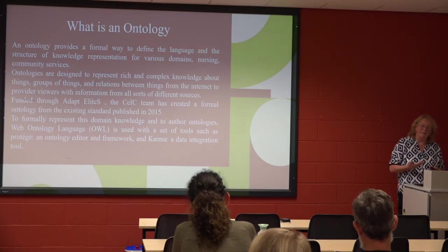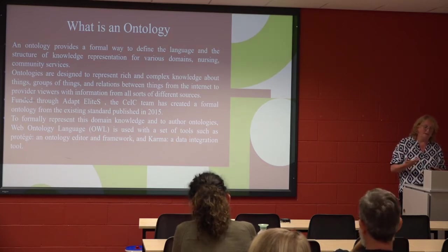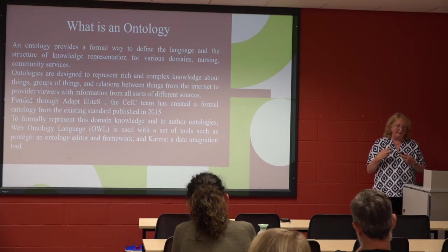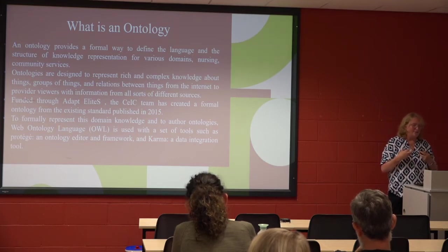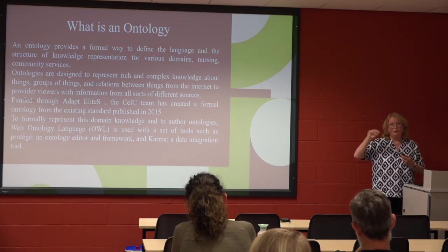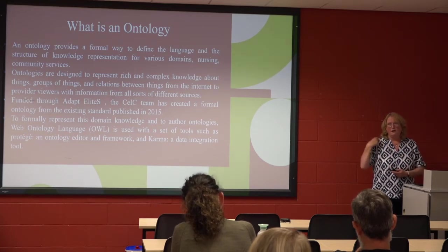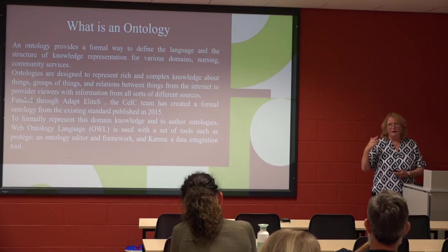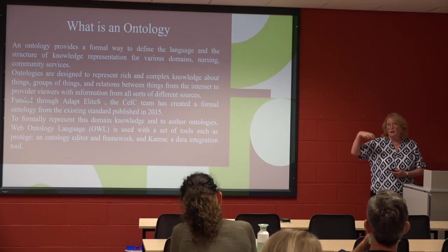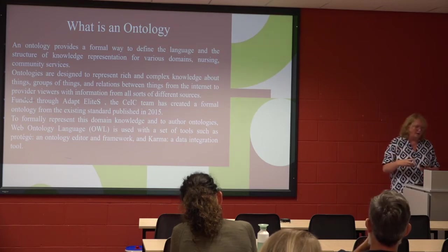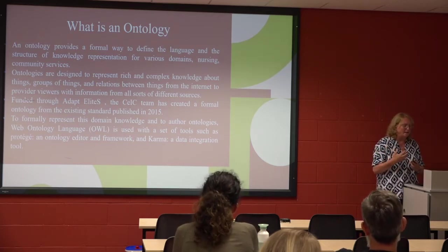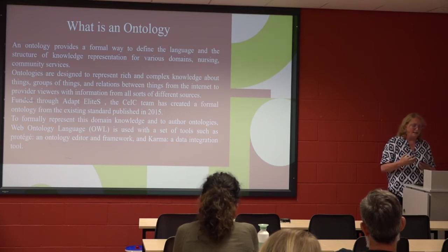An ontology is a formal way to define the language and the structure of the knowledge represented for various domains — nursing, community services. It's also designed to capture really complex information about groups of things and relations between things. That's important. It's very important to find a citizen in a country looking to connect their information. They may be pregnant, have a chest infection, and suffer from migraine, seeing three separate specialists. The only person really looking at them from a holistic perspective is their GP, and hopefully their primary care service. We need to link the data and represent the complexity of the data about the relations between these things.